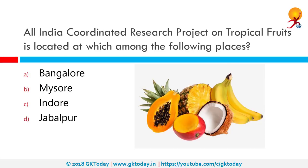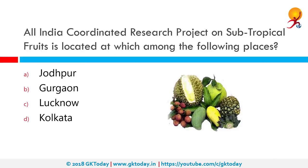All India Coordinated Research Project on Tropical Fruits is a landmark in the history of agricultural research, extended to fruit crops by ICAR during the fourth five-year plan between 1969 and 1974, on July 31, 1971. It is in Bangalore. The All India Coordinated Research Project on Subtropical Fruits, which includes mango, guava, litchi and other ad hoc fruit schemes, is a part of the Central Institute for Subtropical Horticulture, Lucknow.